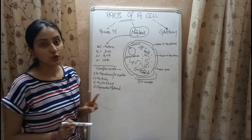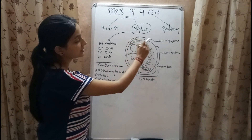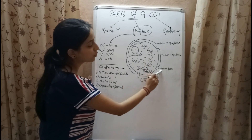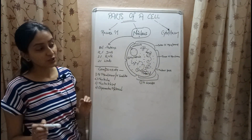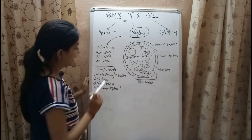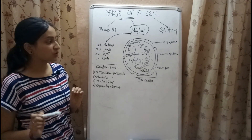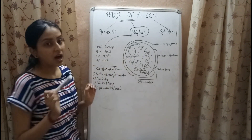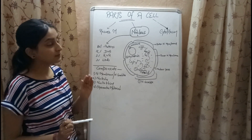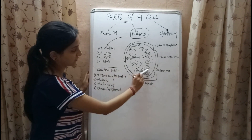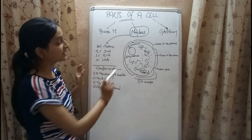Nucleus has four major components: nuclear membrane, nucleolus, nucleoplasm, and chromatin material. The nuclear membrane, also known as the nuclear envelope, consists of two layers — an outer and an inner nuclear membrane — and is discontinuous, containing nuclear pores responsible for exchange of materials. The nucleolus is a non-membrane bound structure consisting of RNA and proteins, and is the site for ribosome synthesis. Ribosomes help in protein synthesis in the cytoplasm.